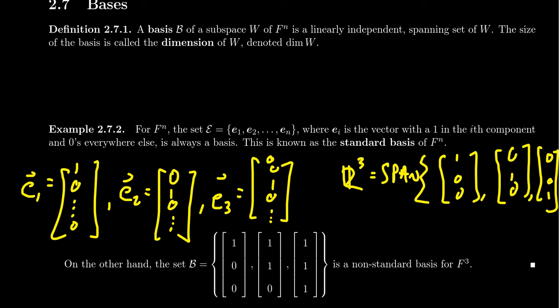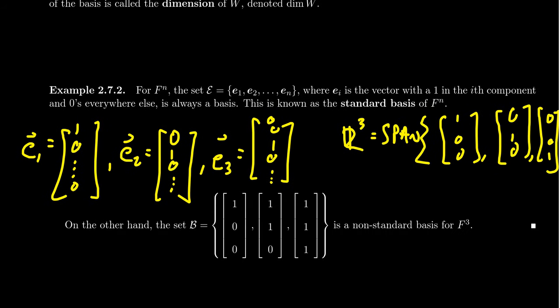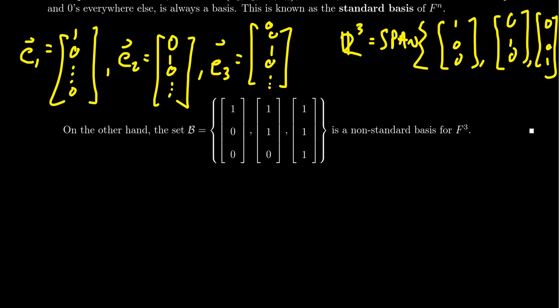But like I mentioned earlier, that's not the only basis for F^n. There are multiple bases, and so consider the following. Take this basis B, which contains the vector [1, 0, 0], which admittedly, this vector right here is just E_1.